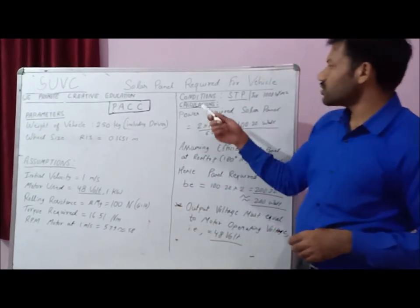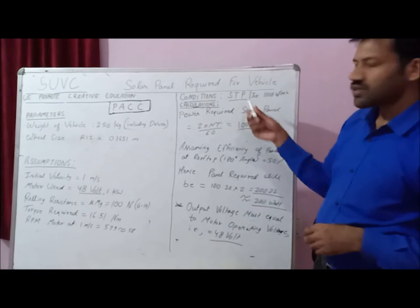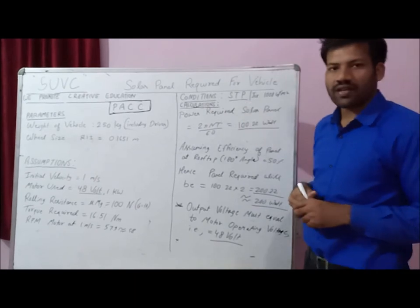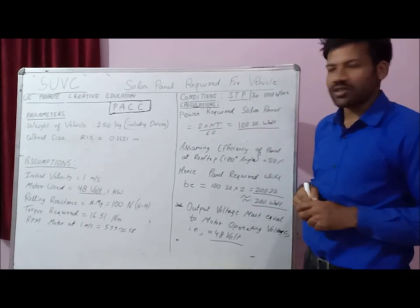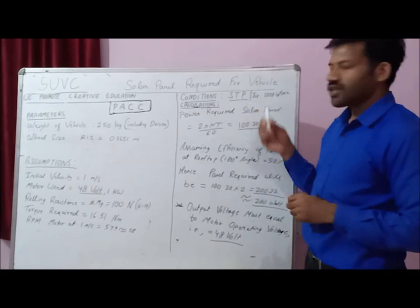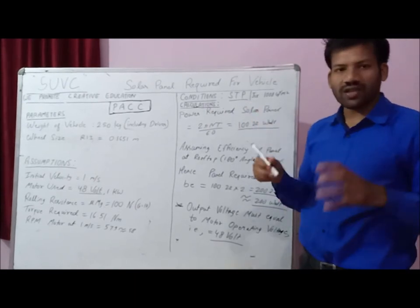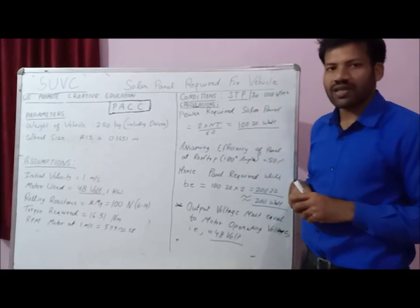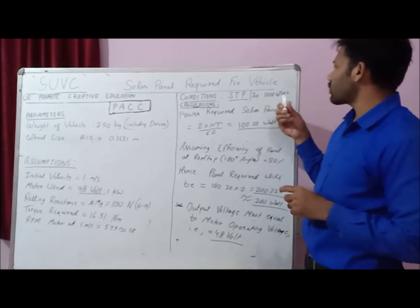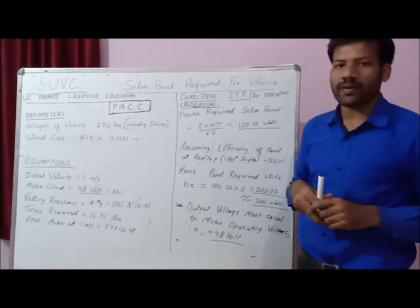Moving to the third step: Conditions. The conditions are standard temperature and pressure, and the irradiance of sunlight available at that time will be 1000 watts per meter squared.